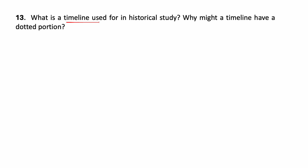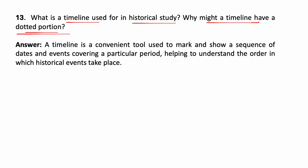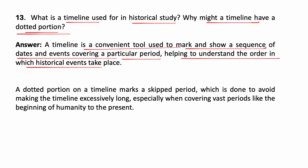What is a timeline used for in historical study, and why might a timeline have a dotted portion? A timeline is a convenient tool used to mark and show a sequence of dates and events covering a particular period, helping to understand the order in which historical events take place. A dotted portion on a timeline marks a skipped period, which is done to avoid making the timeline excessively long, especially when covering vast periods like the beginning of humanity to the present.